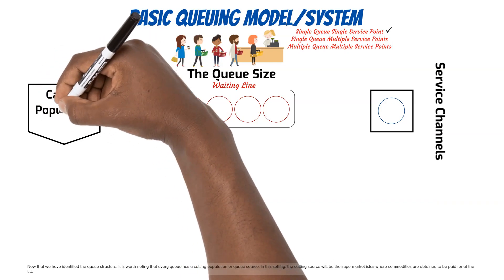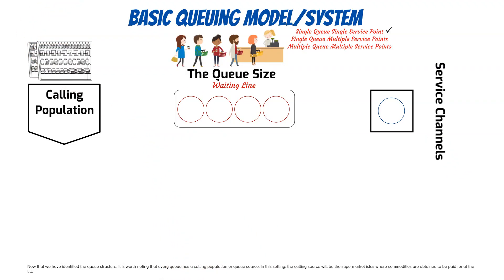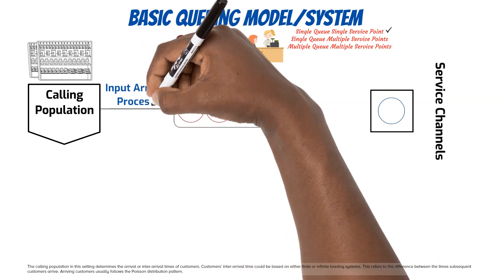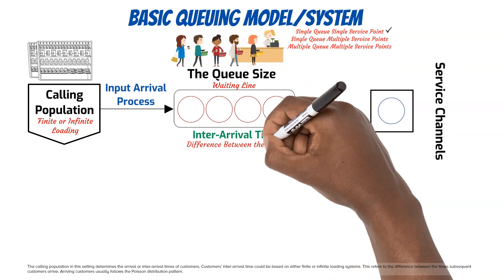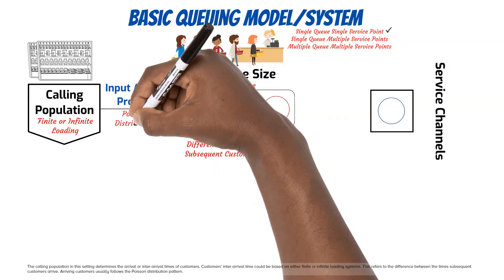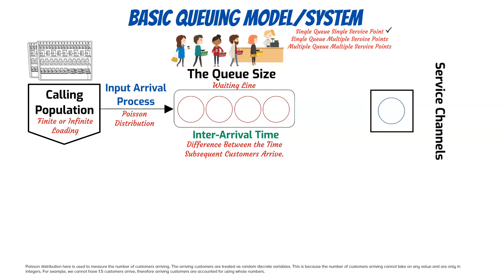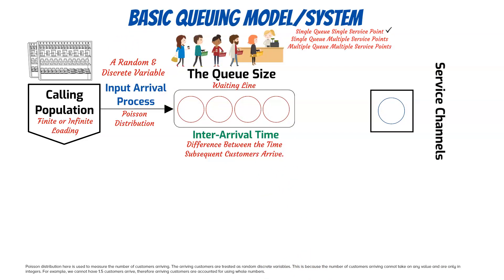Every queue has a calling population or queue source. In this supermarket setting, the calling source is the supermarket aisles where commodities are obtained to be paid for at the till. The calling population determines the arrival or inter-arrival times of customers. Customers' inter-arrival time could be based on either finite or infinite loading systems. Arriving customers usually follow the Poisson distribution pattern, which is used to measure the number of customers arriving. The arriving customers are treated as random discrete variables because they can only take integer values — for example, we cannot have 1.5 customers arrive.